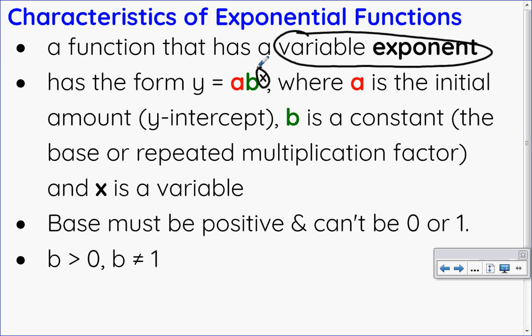Here is an exponential function: y equals a times b to the x. Now a is your initial amount — because it's not tied to an x value, it's actually the y-intercept. B is a constant, it's your base, your multiplication factor, and x, the exponent, is your variable.